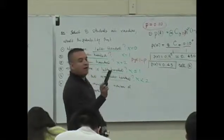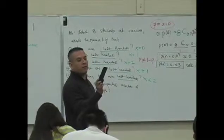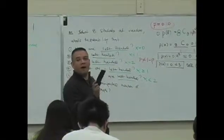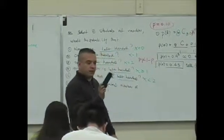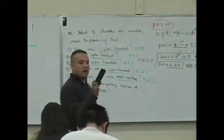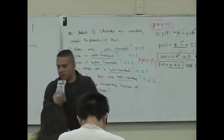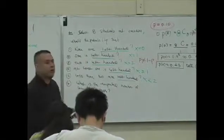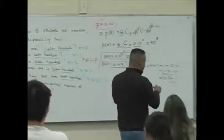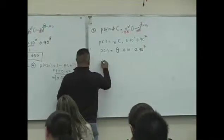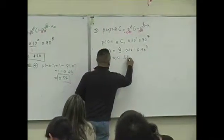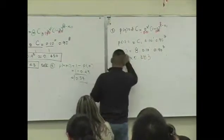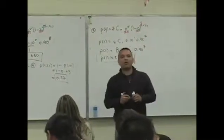You even see the first line: 8 times 0.1 to the first power times 0.9 to the seventh power. What do I get? The answer: 0.38263752. I approximate this to the nearest thousandths. The answer is 0.383. P of one is approximately 0.383.